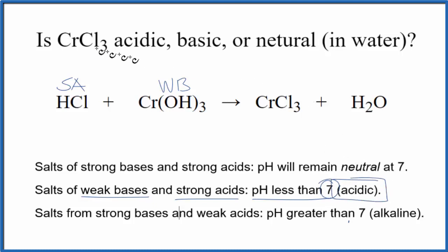So in answer to the question, chromium-3-chloride is going to form an acidic solution when it's dissolved in water. pH will be less than 7.